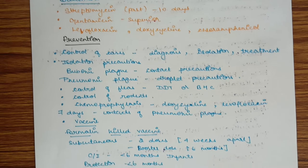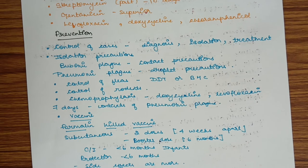Chemoprophylaxis: doxycycline or levofloxacin for 7 days, not in all people, just in cases of contact with pneumonic plague.